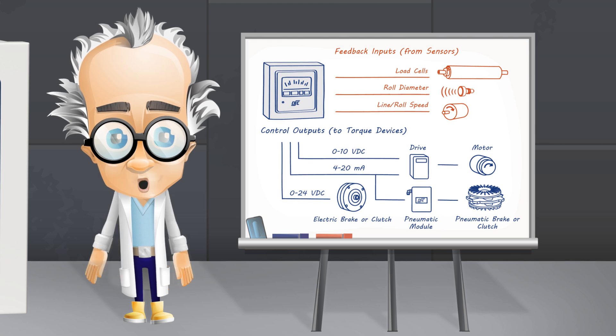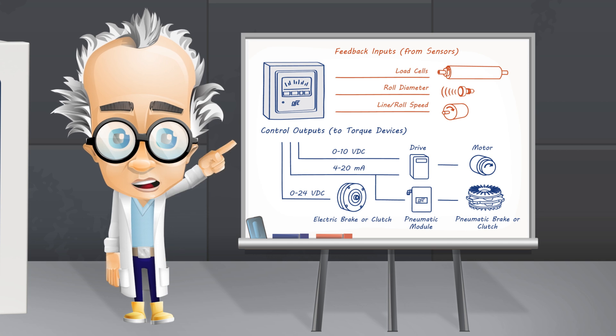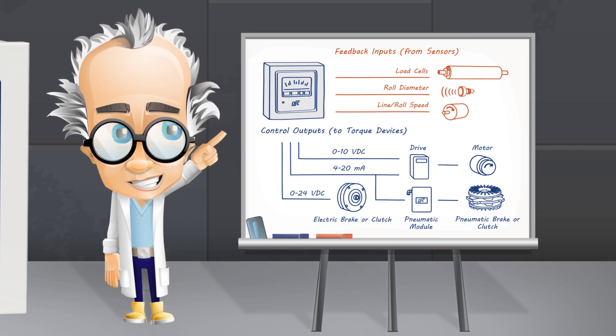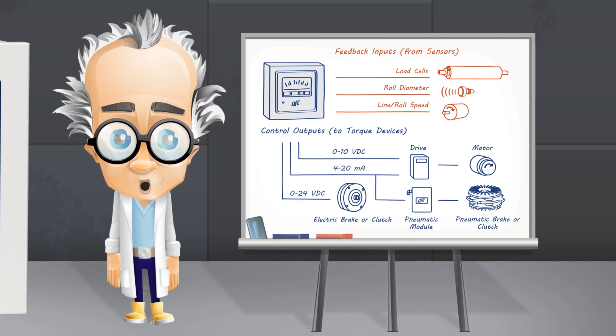Along with the web tension signal from the load cells, the controller can also utilize feedback from the line speed, roll speed, and roll diameter to enable additional performance features such as taper tension and acceleration compensation.